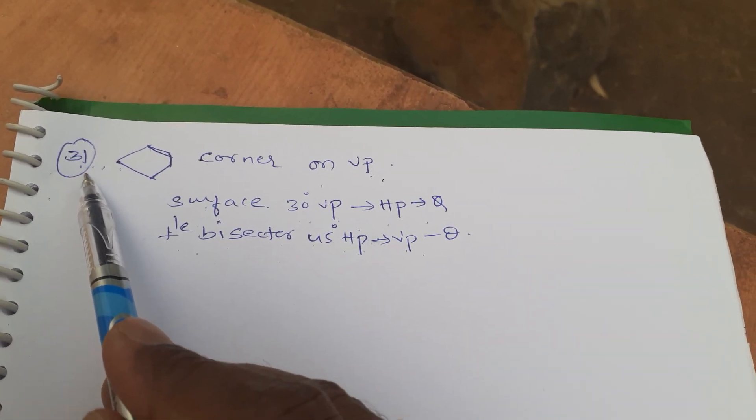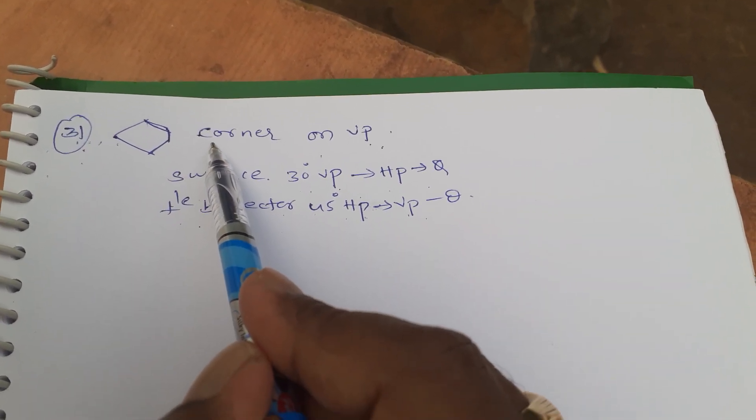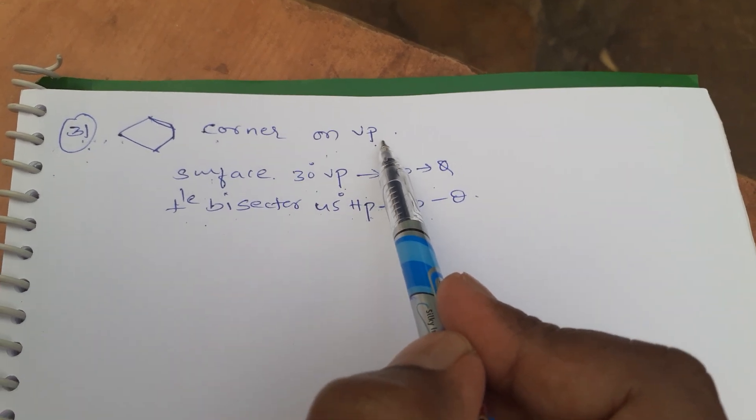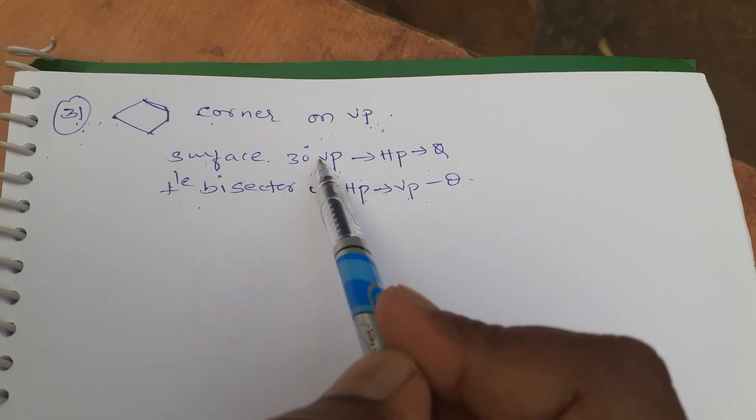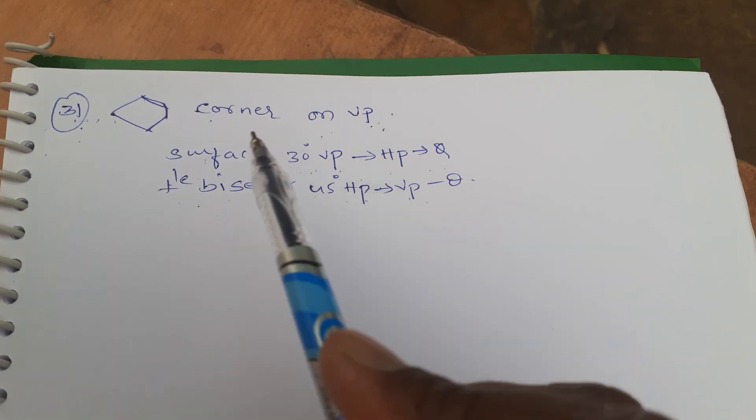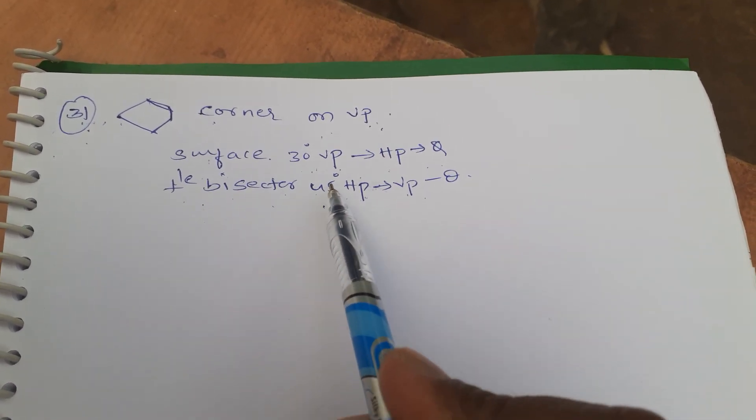Students, today we are going to deal with the 31st problem which is resting on a corner on VP. The surface makes a 30 degree to VP, and the perpendicular bisector makes 45 degrees to HP.